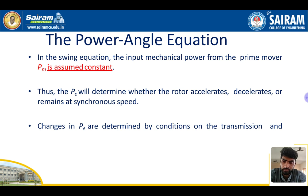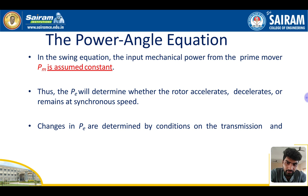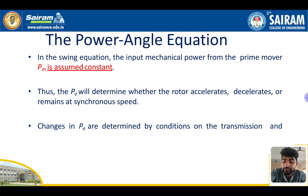Pm is the mechanical power developed by the generator or synchronous motor, and Pe is the electrical power developed. In this swing equation, the input mechanical power from the prime mover Pm is assumed to be constant. For a generator, the turbine is the mechanical input — the turbine gives mechanical input and electrical output is obtained from the generator.